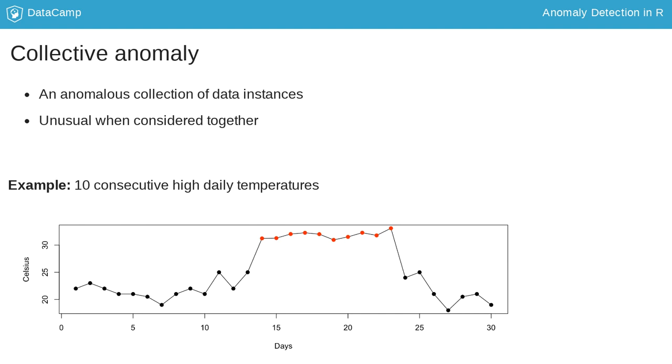Data points in a collective anomaly may each also be point anomalies, but this needn't be true. For example, in the case of daily temperatures in a heat wave, a single warm day in summer may be completely normal for the season, but several such days that occur consecutively can cause the event to be considered an anomaly.